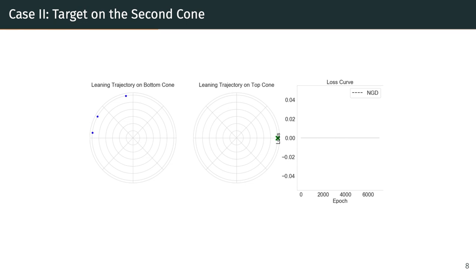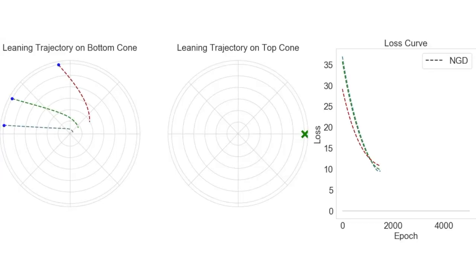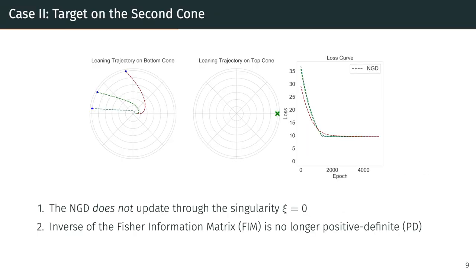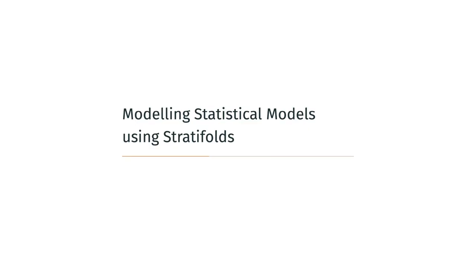Let's look at the learning trajectories. If the natural gradient descent does not update through the singularity, the parameters get stuck on the first cone. This can be explained by the Fisher information matrix no longer being positive definite at the singularity. Starting from these experiments, we propose to use stratifolds in statistical modeling.